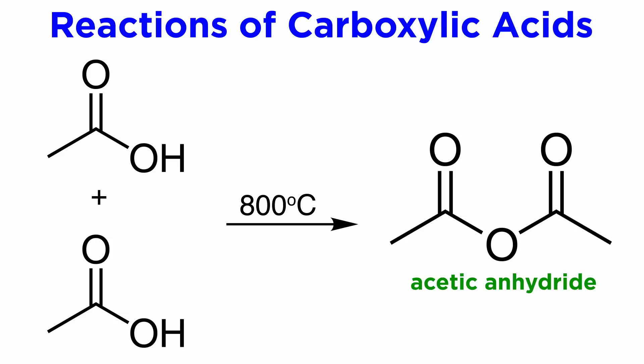Carboxylic acids can react in similar fashion with themselves to generate acid anhydrides. If this oxygen from acetic acid attacks the carbonyl carbon of another molecule of acetic acid at very high temperatures, acetic anhydride will be generated.